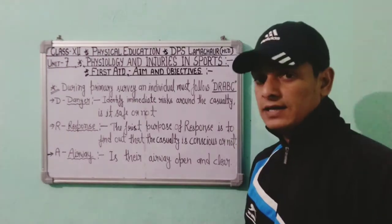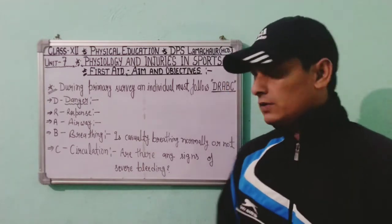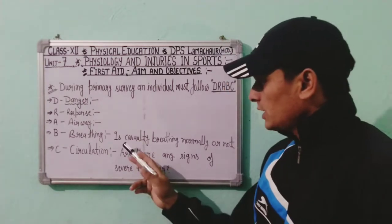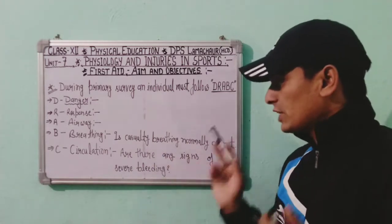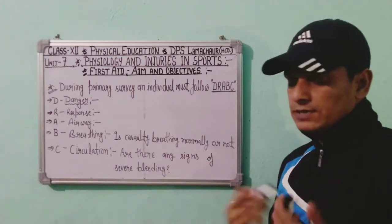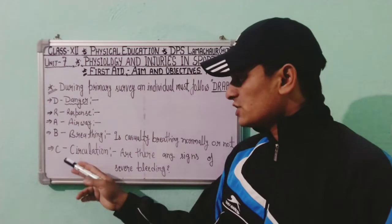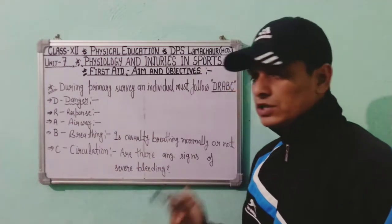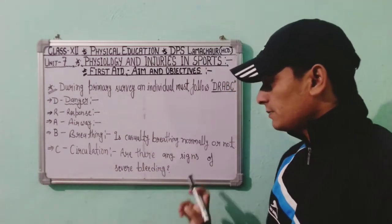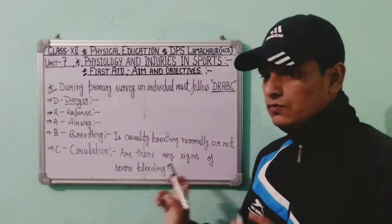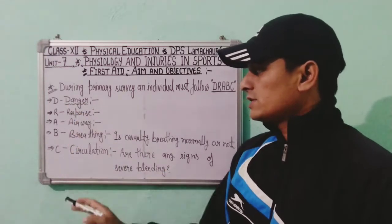The next letter is B, which stands for Breathing. We have to check whether the casualty is breathing normally or not. The last letter is C, which stands for Circulation. We check for any signs of severe bleeding. So this is DRABC: Danger, Response, Airway, Breathing, and Circulation.